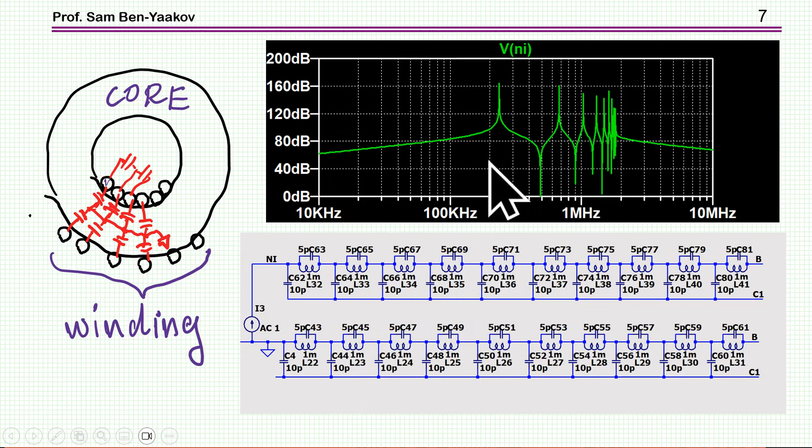Now, why do we have these peaks? Well, there are many reasons for that. The main one being the fact that in the construction we have capacitances. There are some capacitance between the wires. I'm showing here a toroid. Here is the core. These are the windings.